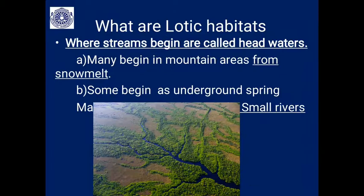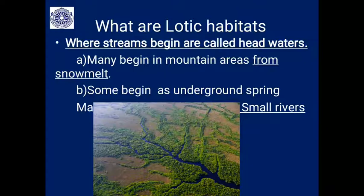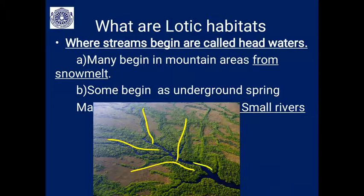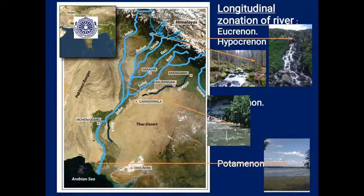Lotic habitats are nothing but streams and rivers. Where streams begin are called headwaters. Many streams begin in mountain areas where snow melts in summer, or from underground springs. They flow into small streams which join into small rivers, as you can see in these pictures. These small rivers later go on to become large rivers — all these are lotic habitats.